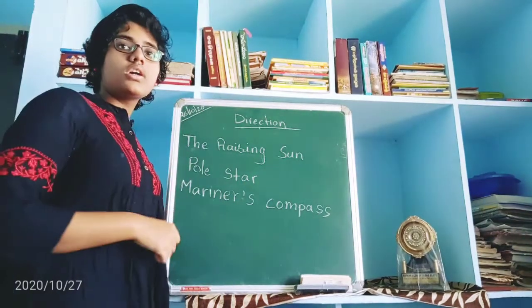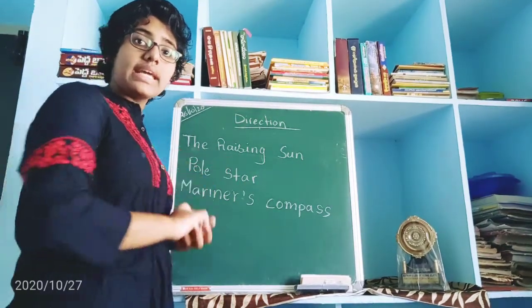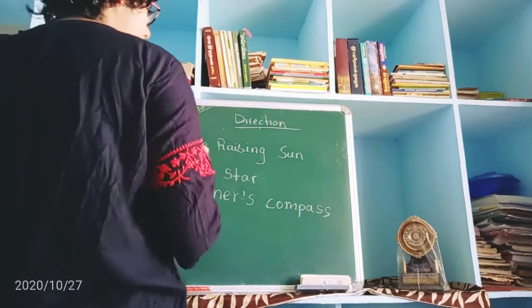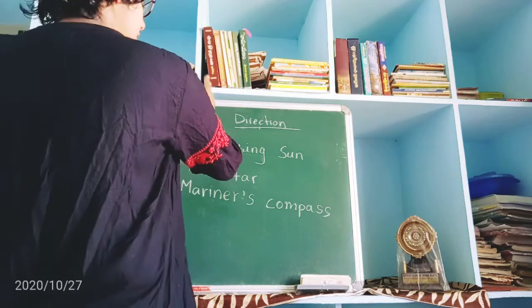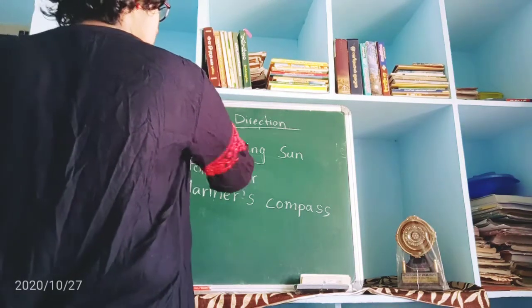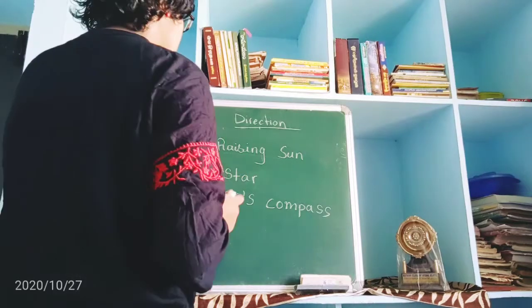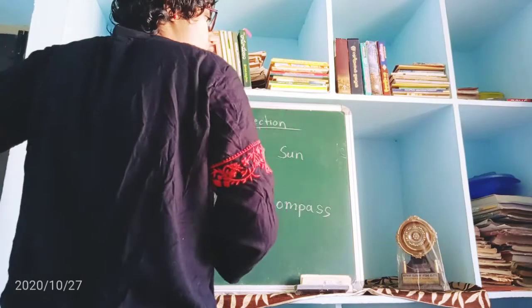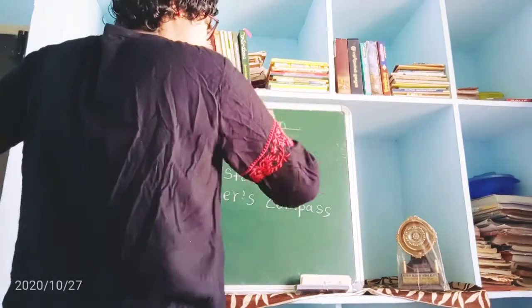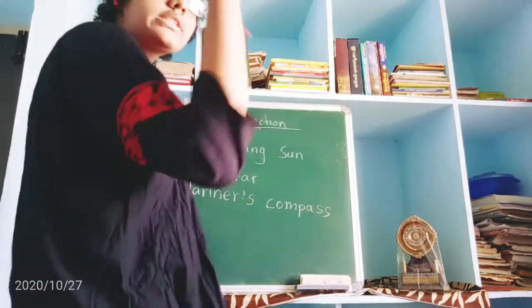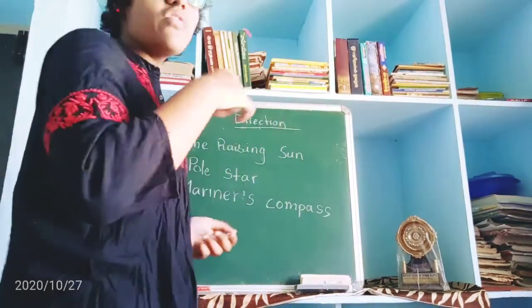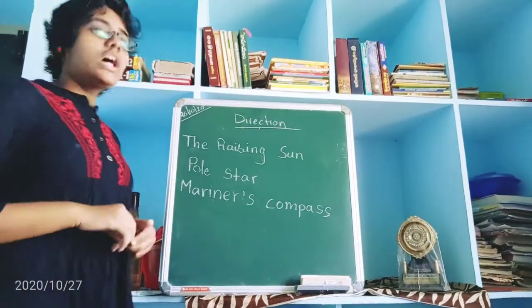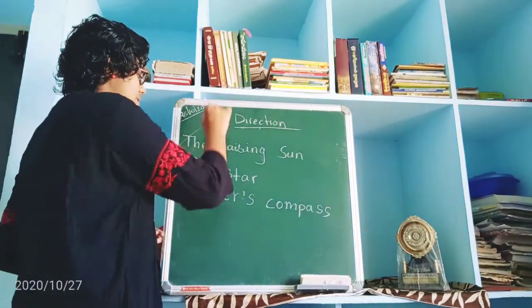To summarize the sun method: facing the sun is East, your left side from East is North, your right side from East is South, and the back side — opposite to East — is West.